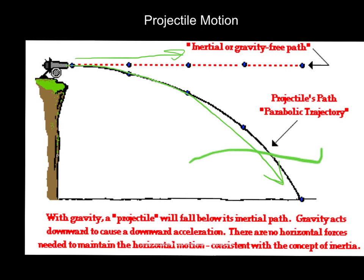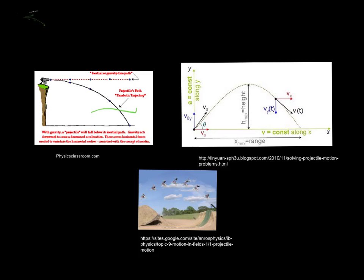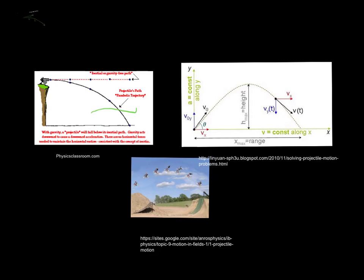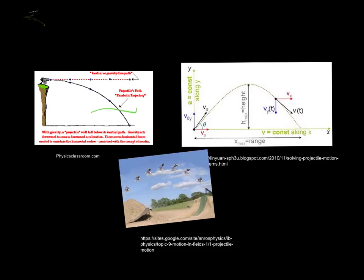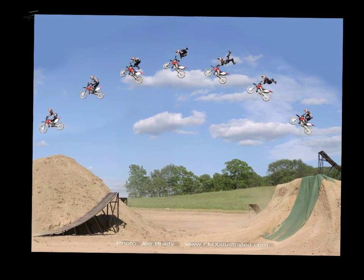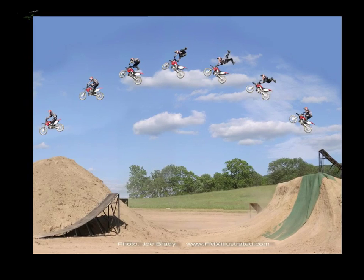Gravity is going to pull it down, so it's going to get faster and faster as it goes down. It could also be as cool as a guy jumping his motorbike across a ditch, and that is also parabolic motion.